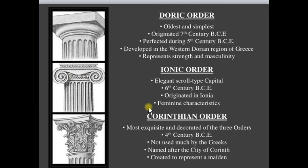The Corinthian order is the most exquisite and decorated of the three orders. It was developed in the 4th century BC, was not used much by the Greeks, and is named after the city of Corinth.